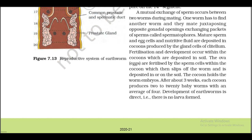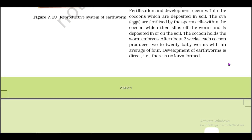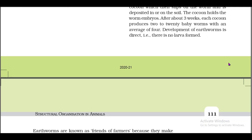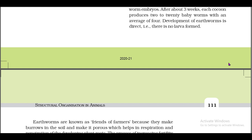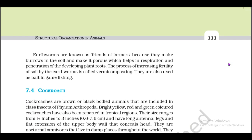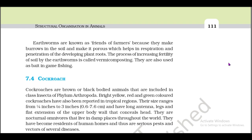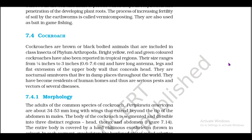The eggs are fertilized by sperm cells within the cocoon. The cocoon slips off the worm and is deposited in or on the soil. After about three weeks, each cocoon produces two to twenty baby worms with an average of four. Development of earthworm is direct — there is no larval stage formed. Earthworms are known as friends of farmers because they make burrows in the soil, making it porous, which helps in respiration and penetration of developing plant roots. The process of increasing soil fertility by earthworms is called vermicomposting. They are also used as bait in game fishing.